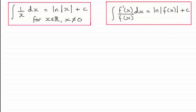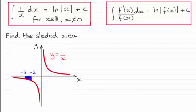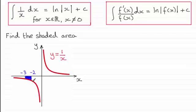I've got this example here where you're asked to find the shaded area for this graph, y equals 1 over x. We've got to find the area shaded in blue, bounded by the x-axis, the curve, and the lines x equals minus 3 and x equals minus 2.